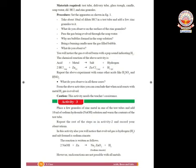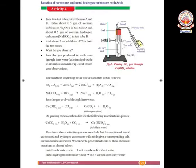When CO2 is liberated in this experiment, it passes through the delivery tube and reaches the test tube on the right side. It then reacts with calcium hydroxide to form a white precipitate, calcium carbonate. The white precipitate settles at the bottom of the test tube and water is also formed. This is the experiment, and you can see the apparatus there.